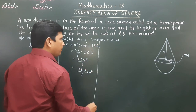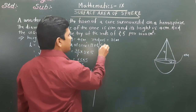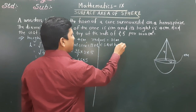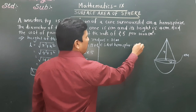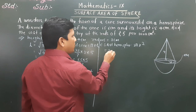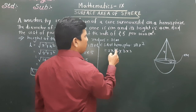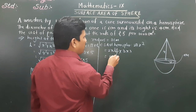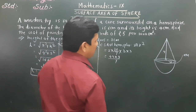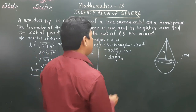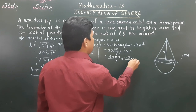Next, we find the curved surface area of the hemisphere. CSA of hemisphere = 2πr² = 2 × 22/7 × 3² = 44 × 9 / 7 = 396/7 cm².